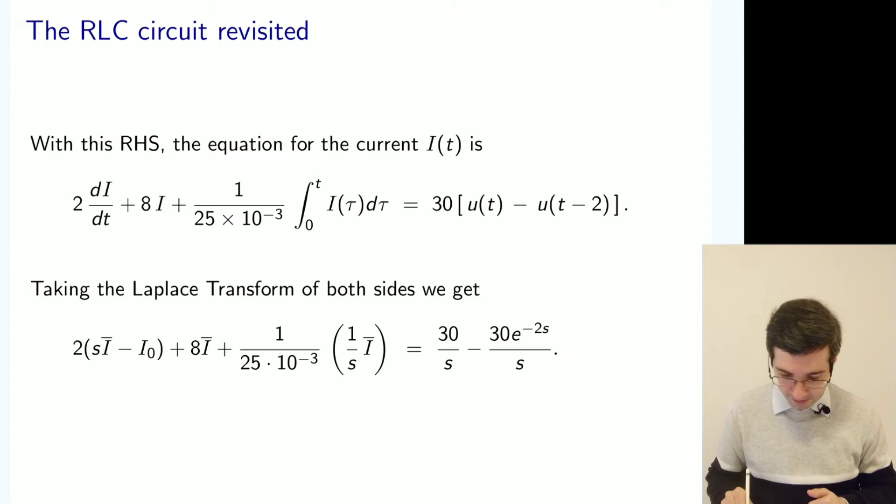And the right-hand side, according to the table, we get 30 over s, and then you have a shifted unit step function u multiplied by the exponential.